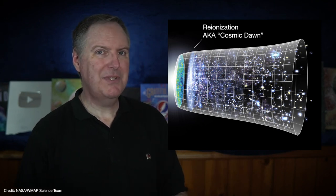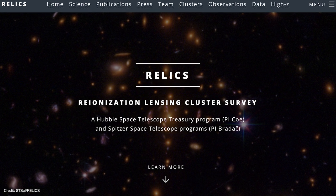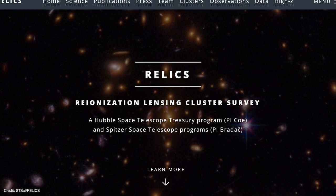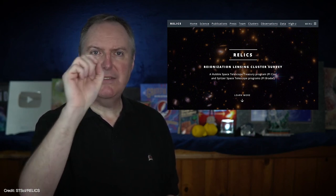To that end, astronomers have been using Hubble as part of the Reionization Lensing Cluster Survey or RELICS. The idea here is to obtain infrared imaging of the most massive galaxy clusters to look for the brightest and highest redshift gravitational lenses.